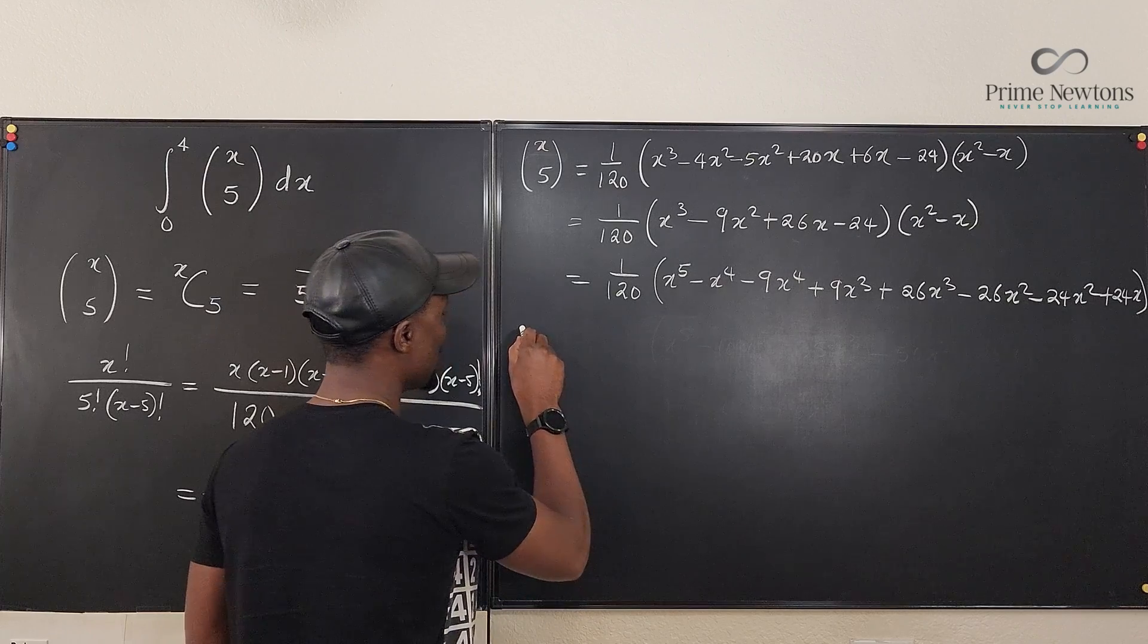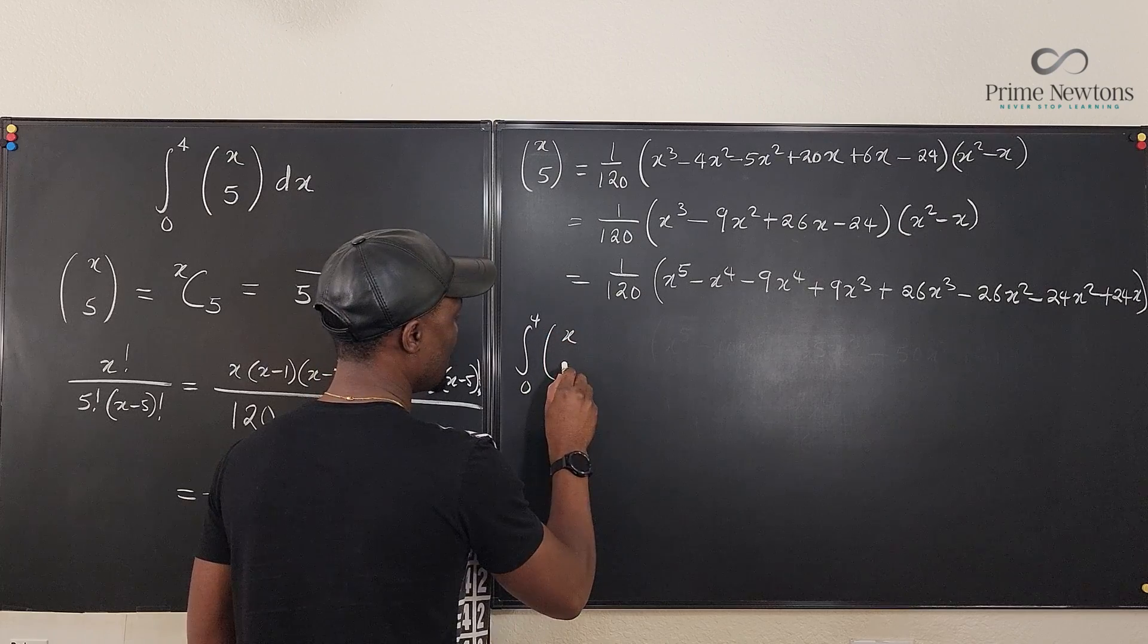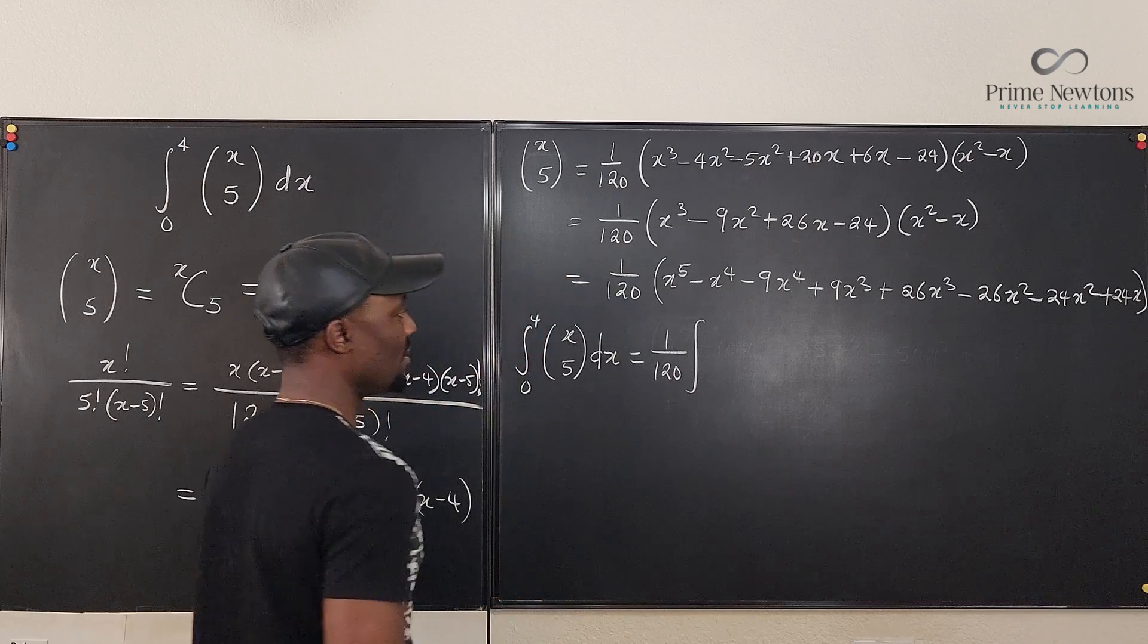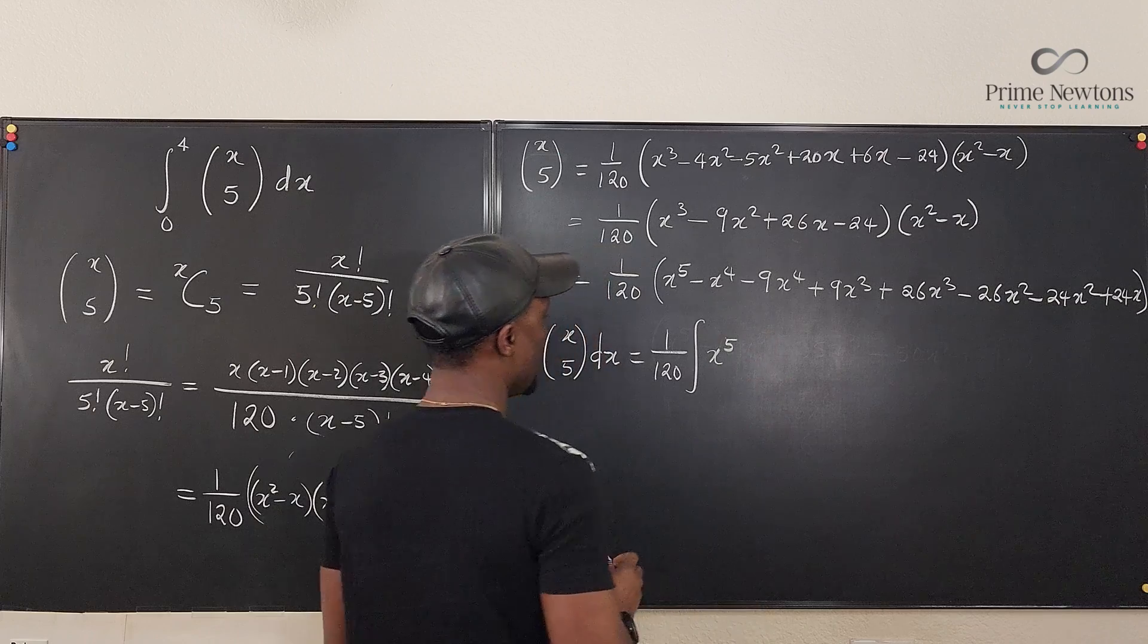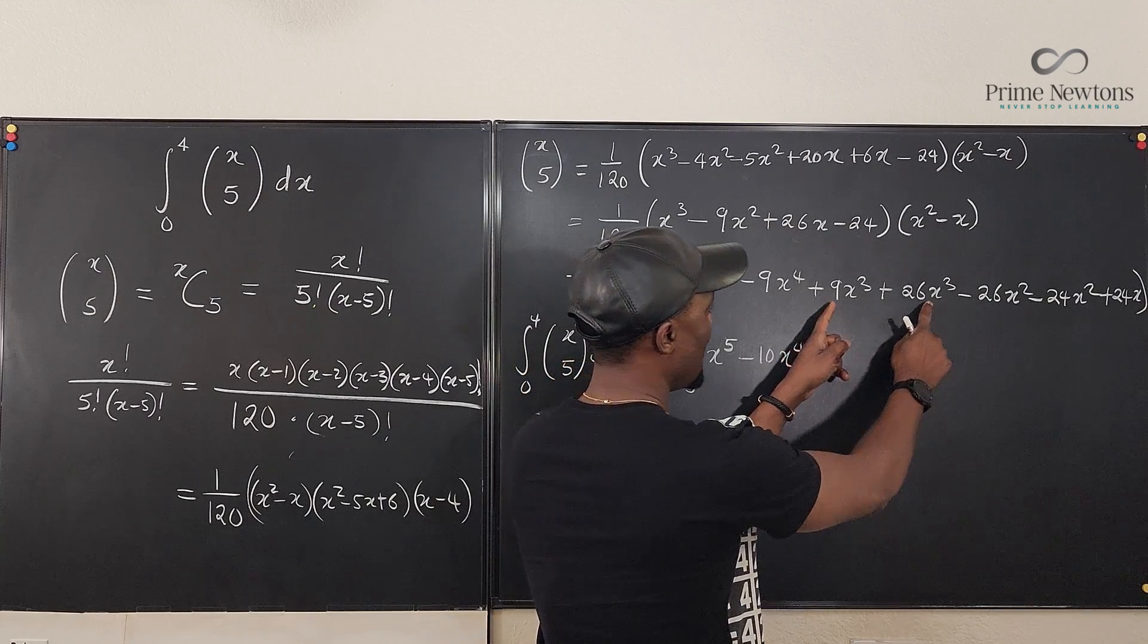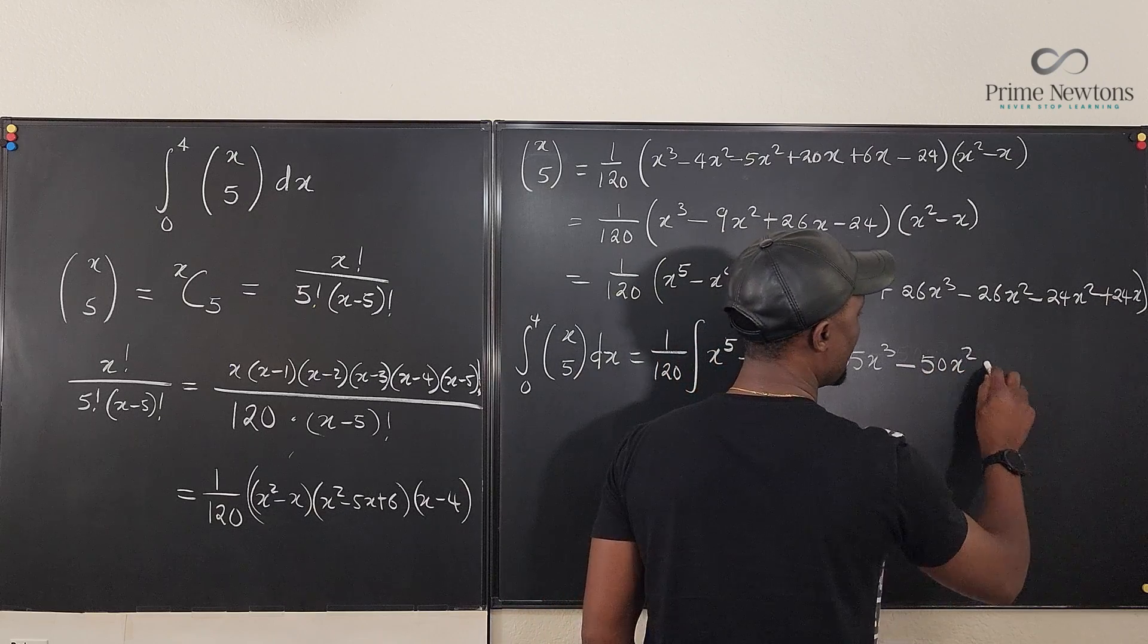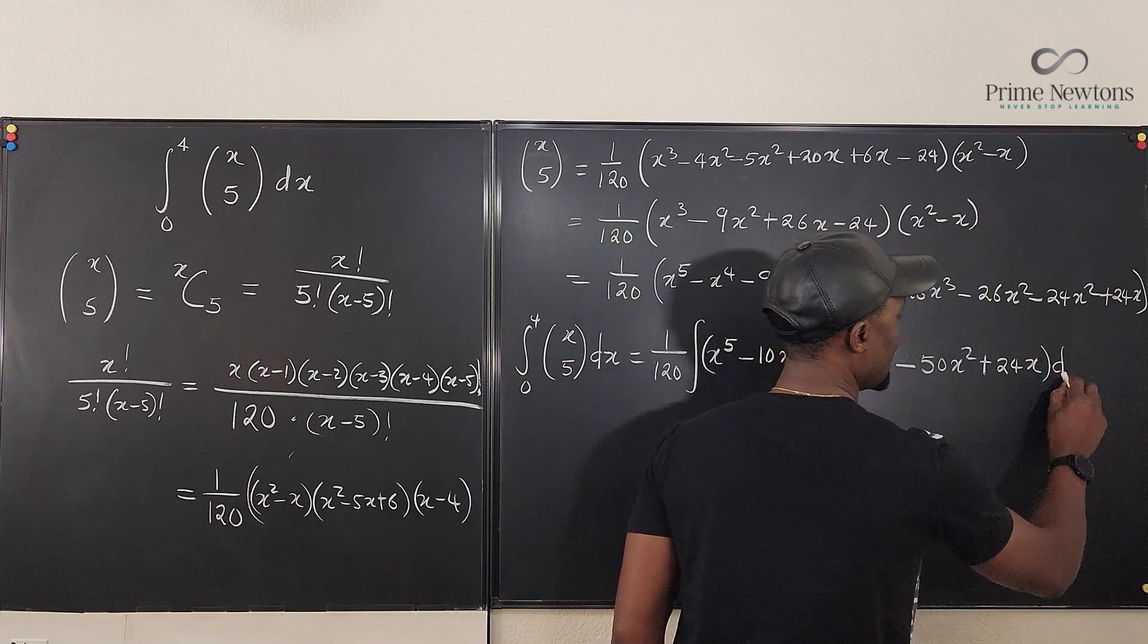And in this case, you know what, I'm just going to write the integral. So we're going to say the integral from 0 to 4 of this combination, x combination 5 dx will be 1 over 120 times the integral. So I pull the 120 behind the integral here. And then we write x to the fifth, and then this would be minus 10x to the fourth. And then we combine these two, it's going to be plus 35x cubed. And we combine these two, it's going to be minus 50x squared. And we have plus 24x. And we put dx here.